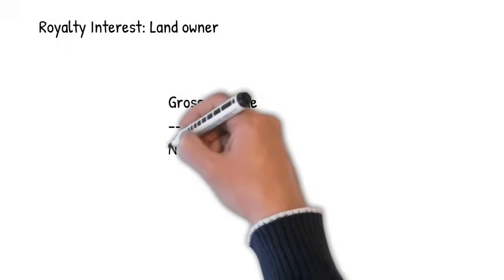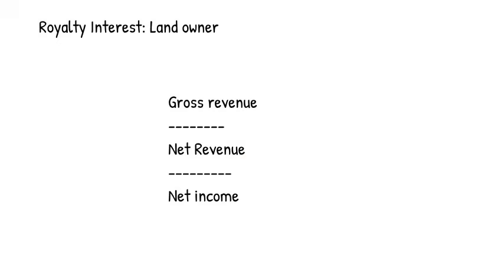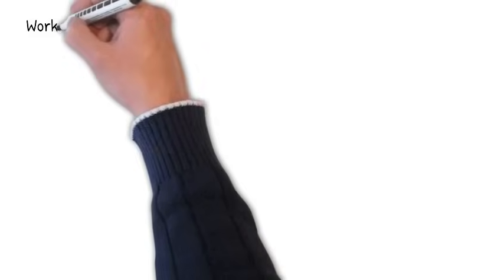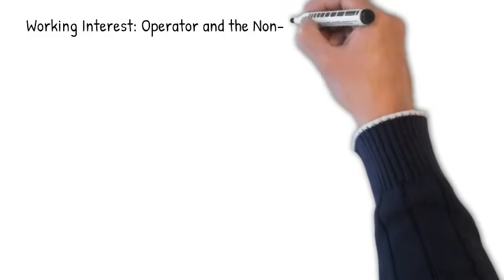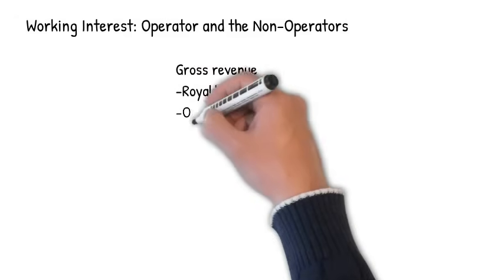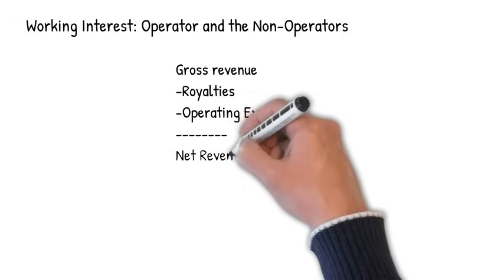Someone to have a royalty interest in an E&P project would be the landowner. People to have a working interest would be the operator and the non-operators.